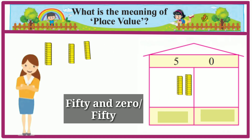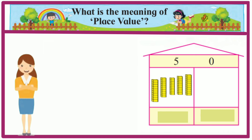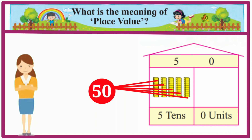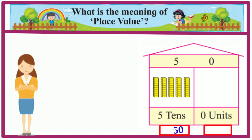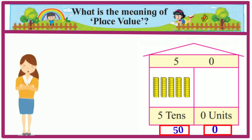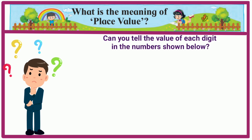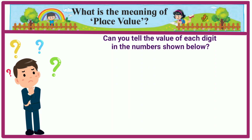In the number 50, 5 is in the tens place. When we open 5 tens bundles we get 50 units. Therefore, in the number 50, the place value of 5 is 50. In the units place we have 0, whose place value is also 0.